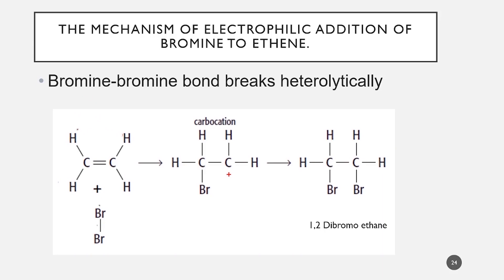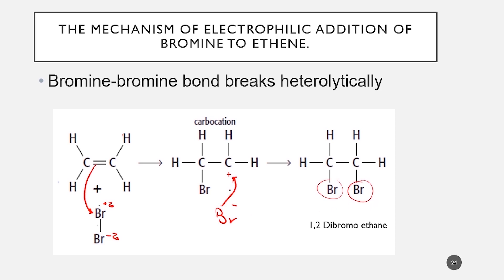Looking at the reaction mechanism of the electrophilic addition of bromine to ethene: the Br-Br bond has an induced dipole, with one bromine carrying a partial positive charge and the other a partial negative charge. The double bond attacks the bromine atom carrying the positive charge, and a bond forms between carbon and bromine. The second bromine, now a negative ion, acts as a nucleophile to attack the carbon carrying the positive charge, forming the sigma bond and giving the product 1,2-dibromoethane.